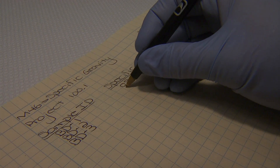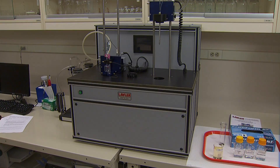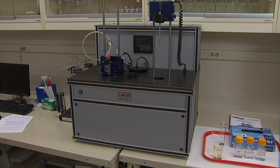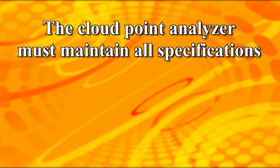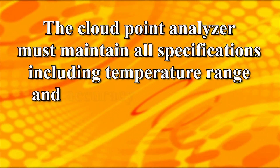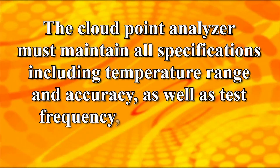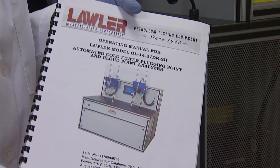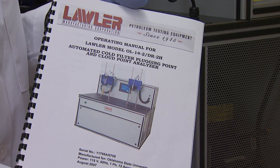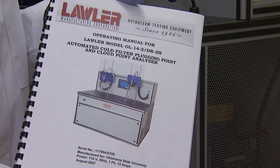Record data at the time of observation. The equipment required includes an automated cloud point analyzer. The cloud point analyzer automatically cools the specimen at a specified rate and examines it periodically. The system must maintain all specifications, including temperature range and accuracy, as well as test frequency, as described in ASTM D2500. FAPC Analytical Services uses the Lawler model shown here.